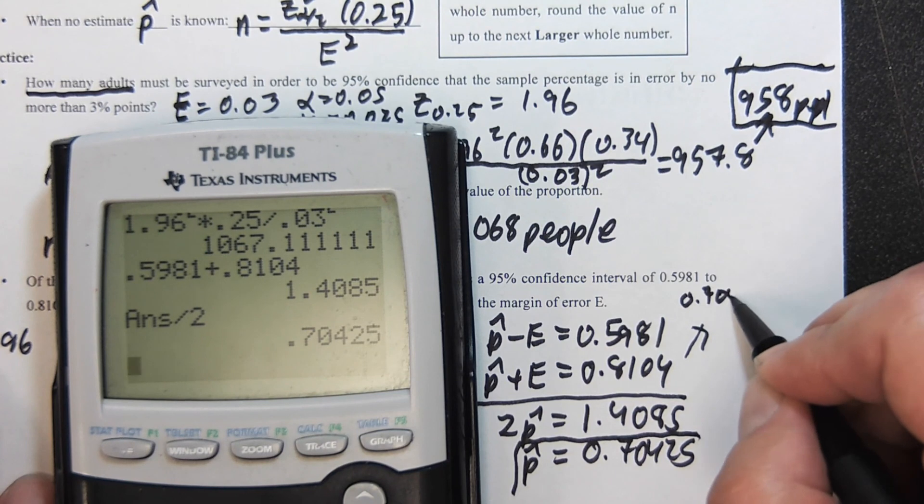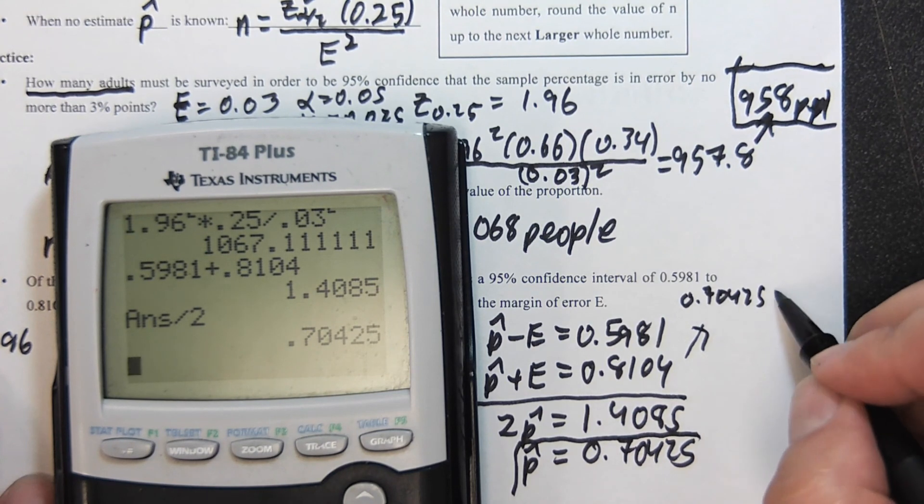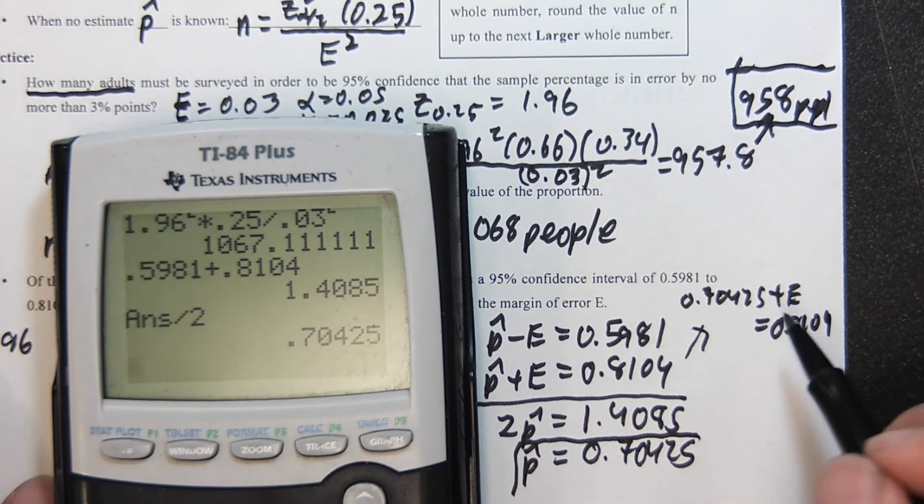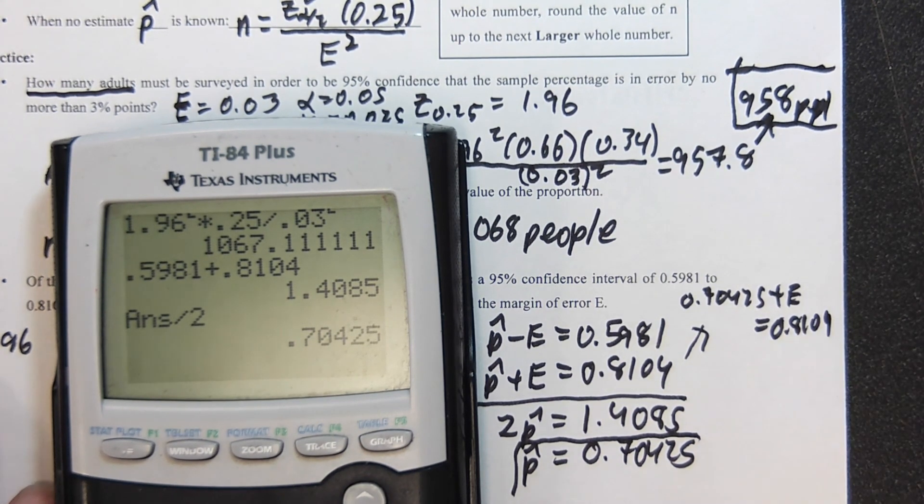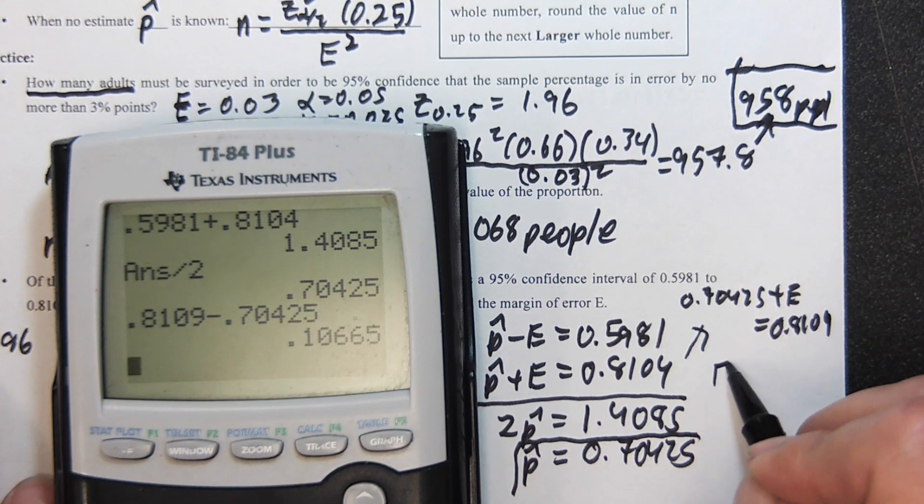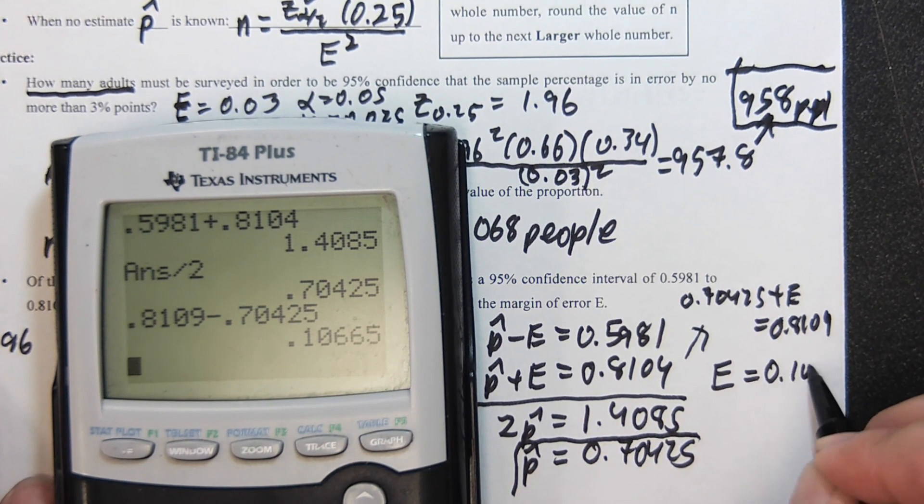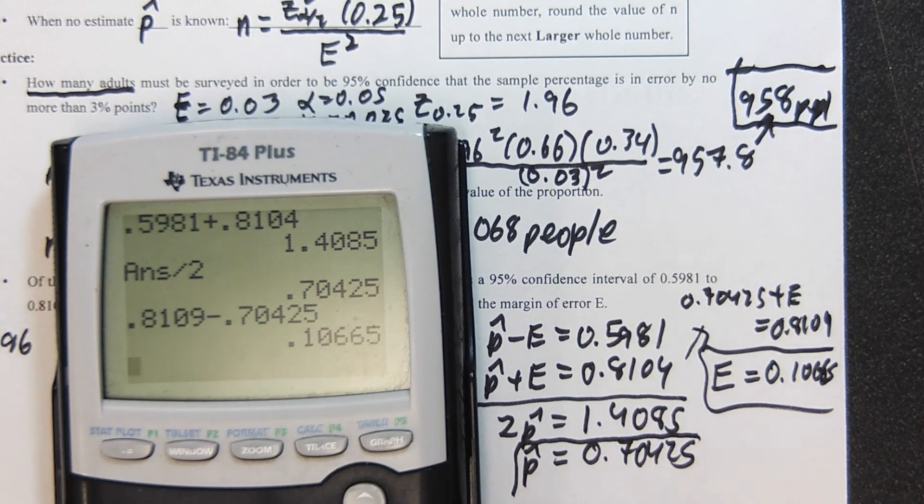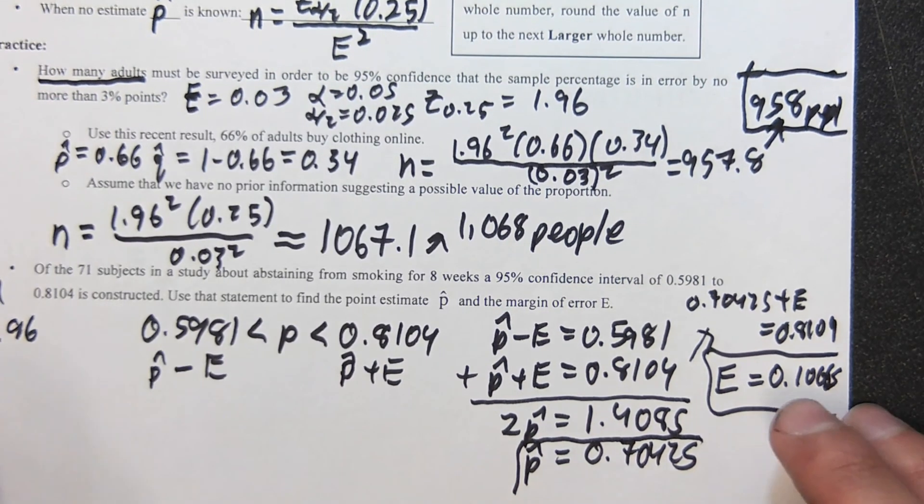So here 0.70425 plus e equals 0.8104. Subtracting that to the other side, 0.8104 minus 0.70425, e is going to be 0.10615. Oh, that's really crowded there, sorry about that. So there is our first.